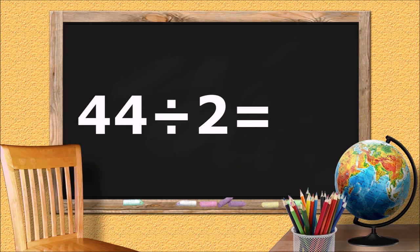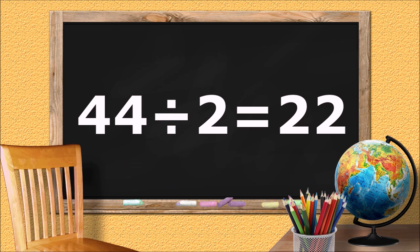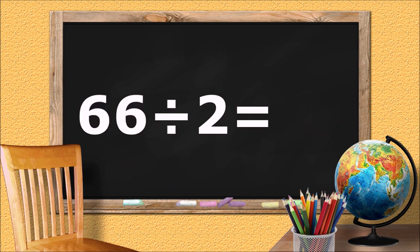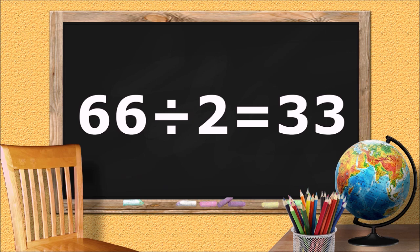44 divided by 2 equals... twenty-two. Sixty-six divided by two equals... thirty-three.